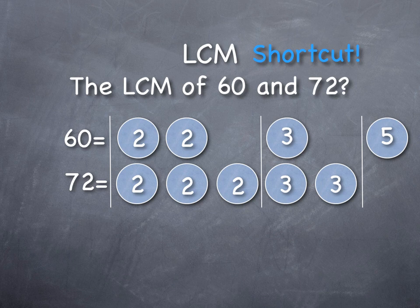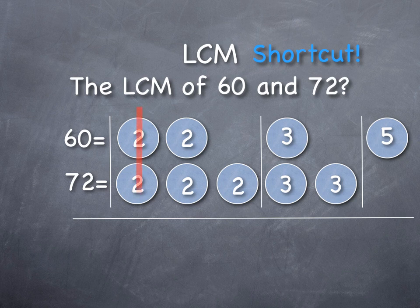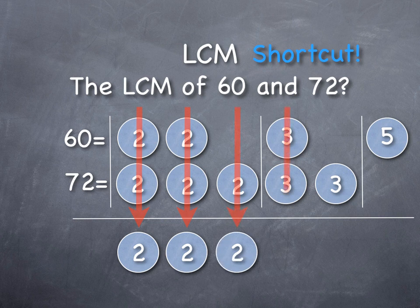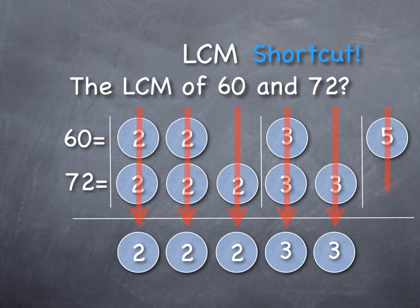And before, what we would do is we would look for any of the unique ones that are between the numbers, so they both had to have two, they both had to have the three. But for the lowest common multiple, what we want to say is if one of them has a two, we keep it. And if one of them has a second two, we keep it. And if only one of them has the third two, we keep the third two. In fact, we take each of the unique ones.